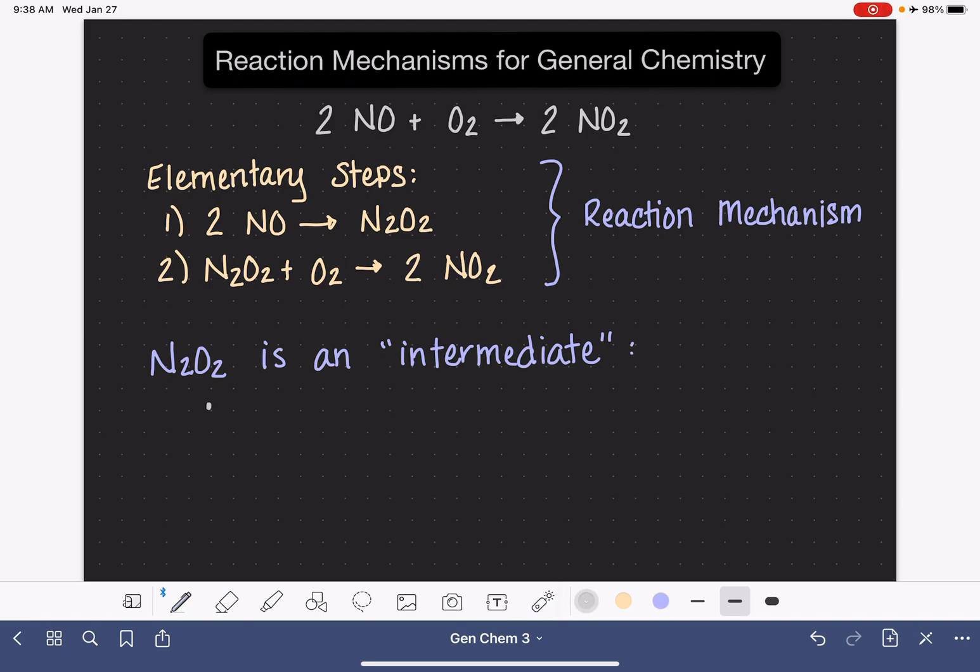Intermediates are not reactants or products of the overall reaction. The overall reaction, which would be not the elementary steps - this is the overall reaction right here. So N2O2 is not a reactant or a product of the overall reaction. It only shows up when we look at the elementary steps or the mechanism.